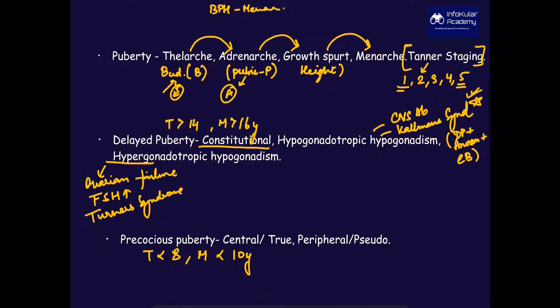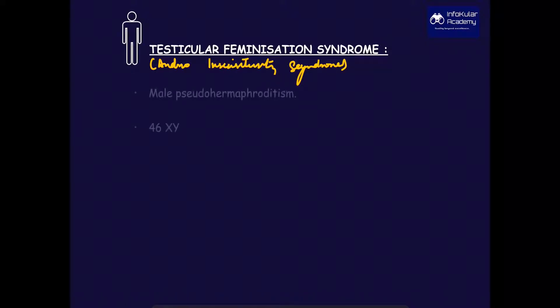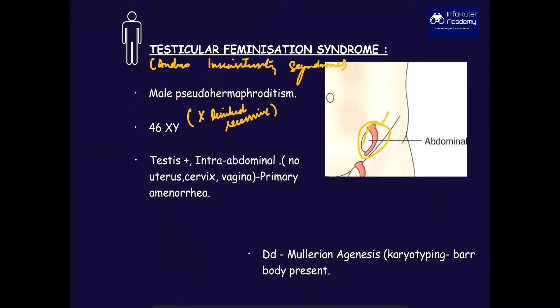Next is testicular feminizing syndrome, also known as androgen insensitivity syndrome. It is a cause of male pseudohermaphroditism and has 46,XY karyotype. However, it is an X-linked recessive disorder. It shows presence of intra-abdominal testes and epididymis, but there is no presence of uterus, cervix, or vagina. Hence, primary amenorrhea is a clinical feature.